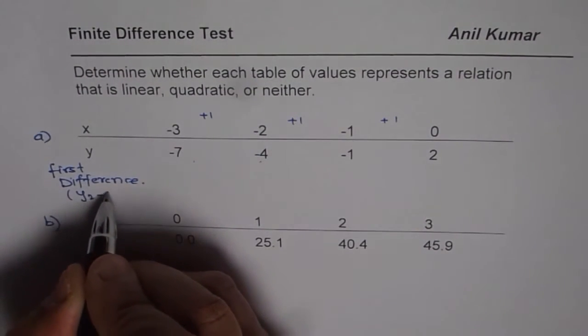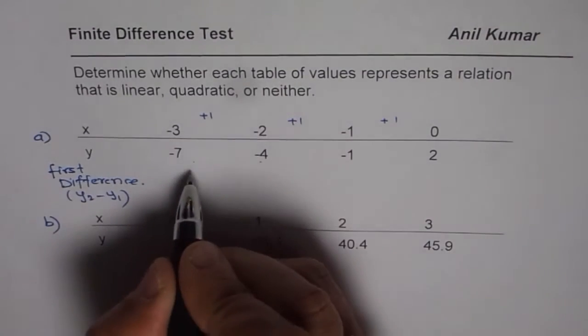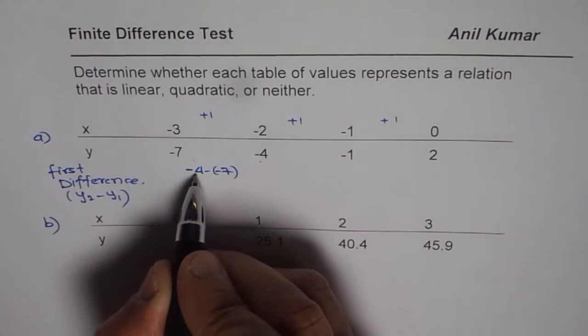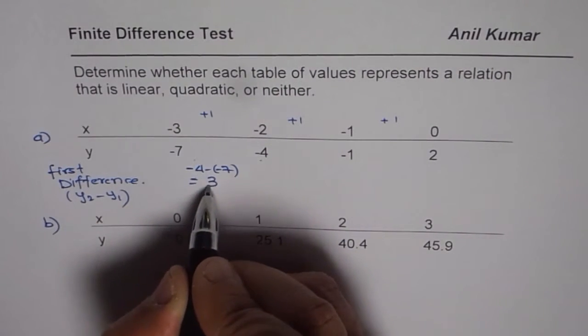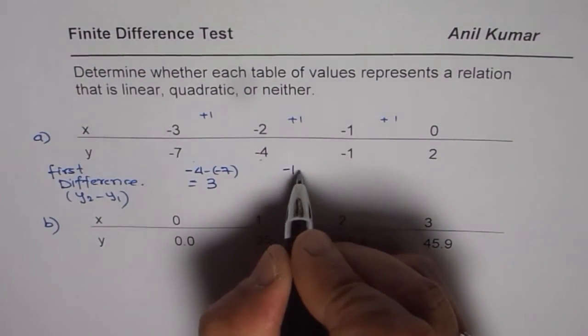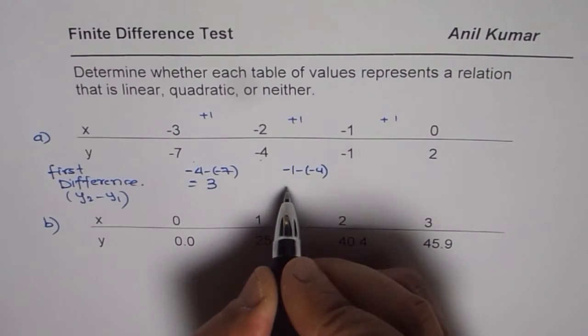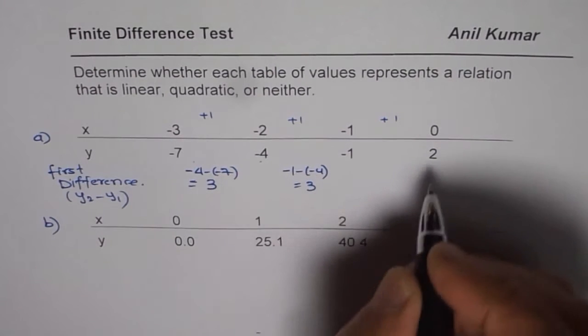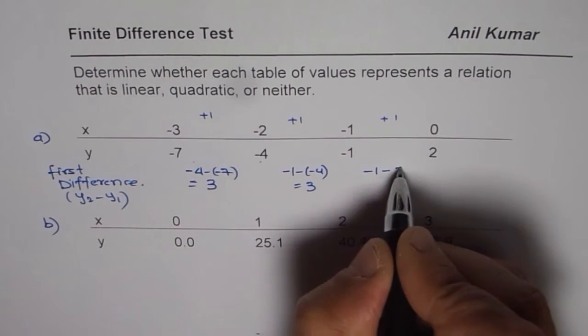Basically, we will do y2 minus y1. So, minus 4 minus of minus 7 is equal to what? Minus 4 plus 7, that is 3. Then, minus 1 minus of minus 4 is equal to minus 1 plus 4, which is also equal to 3.